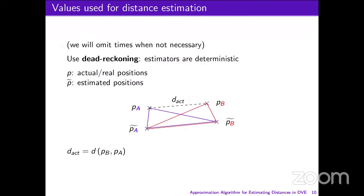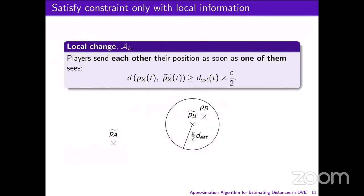We can see that both players know both their actual and estimated positions along with the estimated position of the other player. If we call d_act the actual distance — that is, the distance between both actual positions — none of the two players will know this distance. So in our algorithm, the estimated distance we will use is the distance between the two estimated positions, which is known by both players. Using this estimated distance, we may satisfy the error constraint using only local information. Our algorithm, LocalChange, consists in players sending each other their position as soon as one of them sees that the difference between his actual position and his position as estimated by the other player becomes higher than the estimated distance multiplied by a threshold.